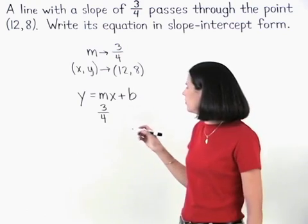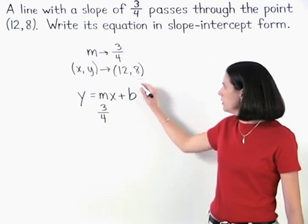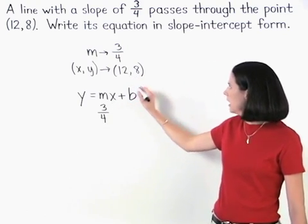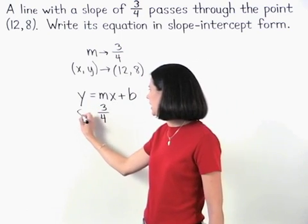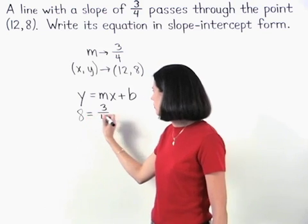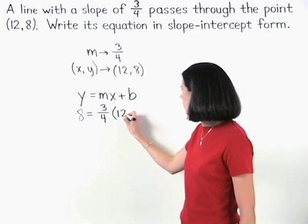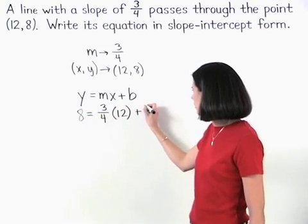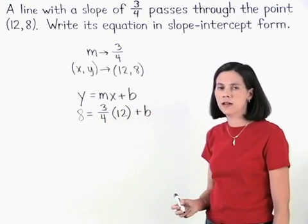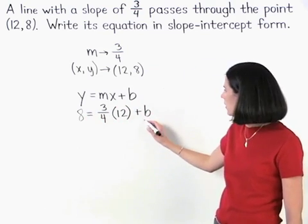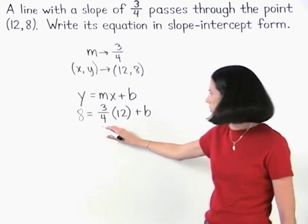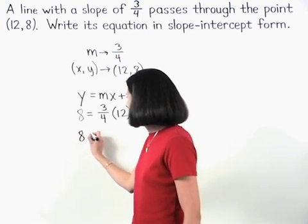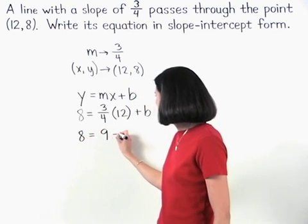So we substitute a 12 in for x and an 8 in for y. And we have 8 equals 3 fourths times 12 plus b. Solving for b, 3 fourths times 12 is 9, so we have 8 equals 9 plus b.